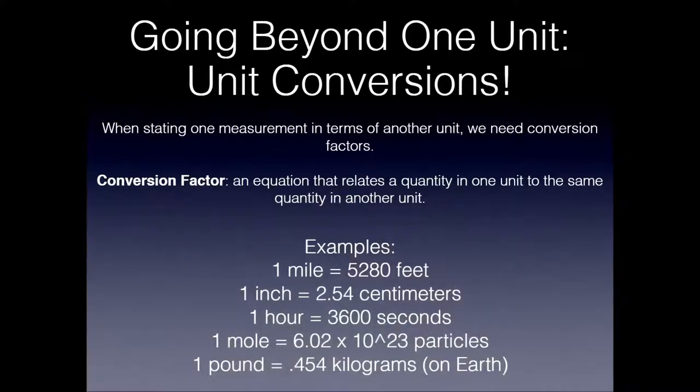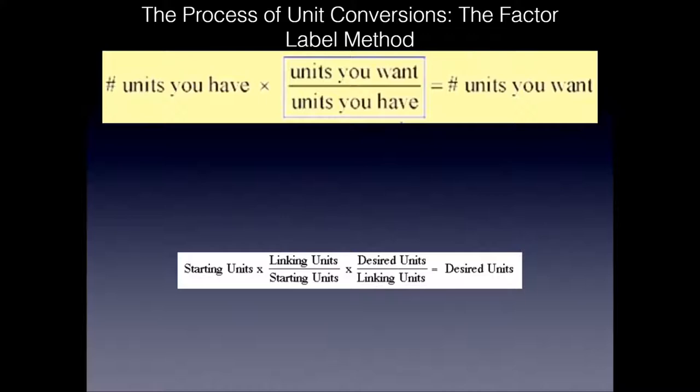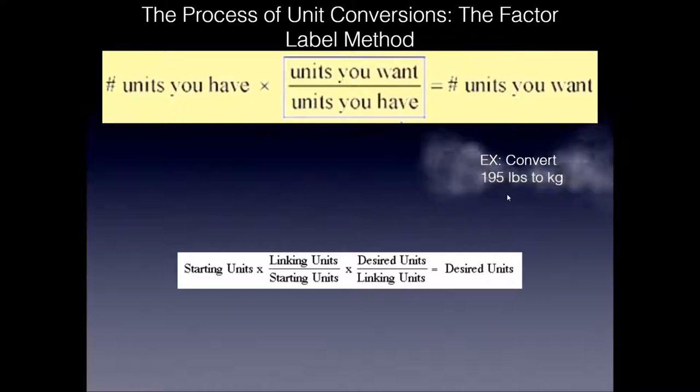Here are some examples that we probably know pretty well. One mile, 5,280 feet. One inch, that's 2.54 centimeters. One hour, that's equivalent to 3,600 seconds. That's a very common one. And we've got the mole, which you know from chemistry. That stands for 6.02 times 10 to the 23 particles. And one pound equals 0.454 kilograms on earth. Each quantity on the left is equivalent to that same quantity on the right in a different unit. How do you get from one unit to the other with a conversion factor? You use the factor label method again. You start with the units you have and the quantity of them and you multiply that by this fraction, which is an equivalent fraction where the top, the units you want, is equated to the denominator, the units you have, using that conversion factor. The units you have will of course cancel and you'll end up with the units you want.